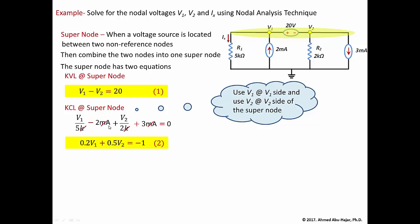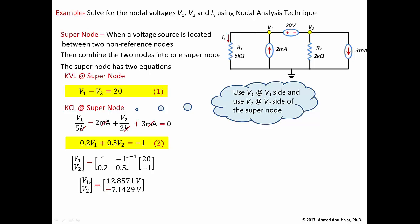We now have two equations and two unknowns. Putting them in matrix form and solving gives V1 = 12.8571 volts and V2 = −7.1429 volts. As a check, V1 minus V2 should equal 20 volts, which it does. Finally, Ix is the current through the 5 kΩ resistor: Ix = V1 over 5k = 2.5714 milliamps.